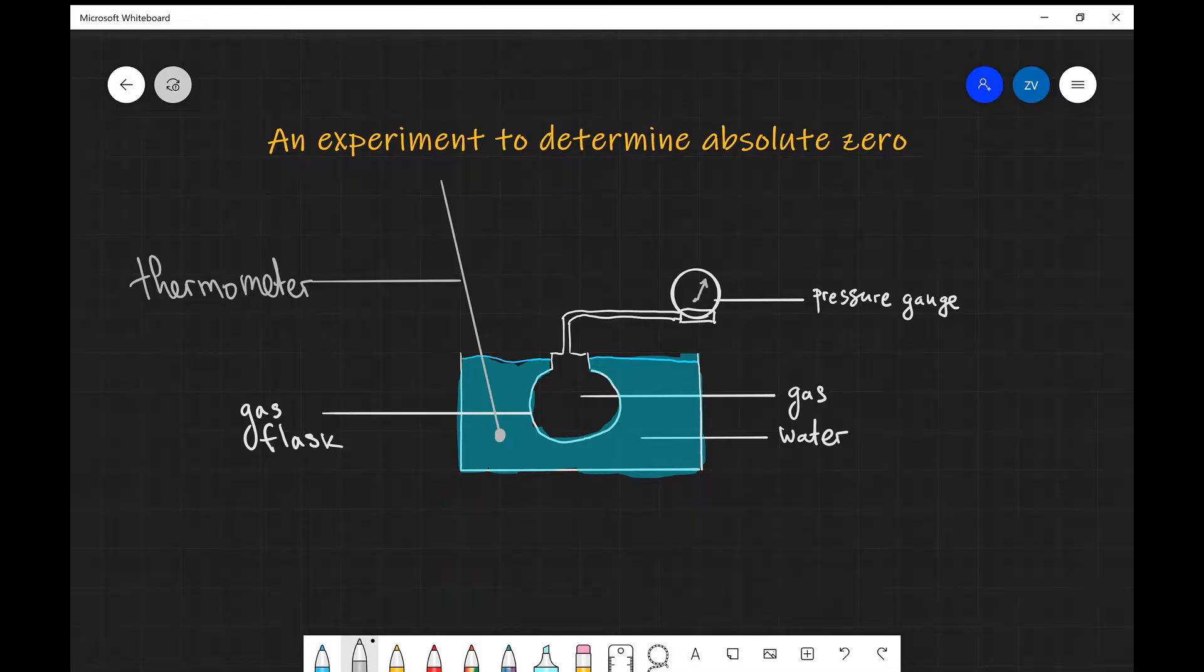in which normally we have either just water, cool down water, or sometimes even ice just so we can take an initial temperature reading of zero degrees Celsius. We also have a gas flask which is typically filled up with air and that's connected to a pressure gauge. We also have a thermometer as well.